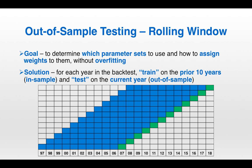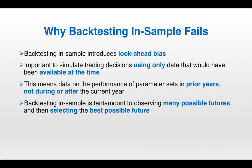For example, to see how the strategy would have performed in 2007, we optimize using 1997 to 2006. When evaluating a trading strategy, we compute the performance metrics over the out-of-sample period — the aggregation of all the testing years, all the green boxes. Backtesting only in-sample without an out-of-sample test or rolling window fails because it introduces look-ahead bias. It's important to simulate trading decisions using only data that would have been available at the time. Backtesting solely in-sample is tantamount to observing many possible futures and then selecting the best one — an obviously bad practice that nonetheless remains the most common backtesting mistake.